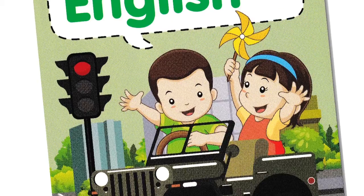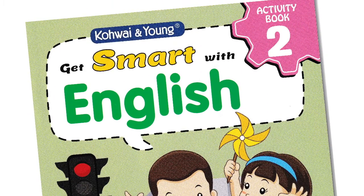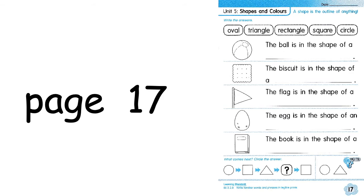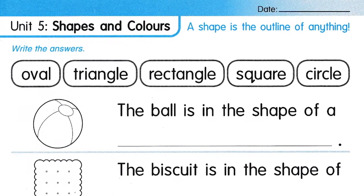Now, let us do our Get Smart with English Activity Book 2. Turn to page 17, Unit 5, Shapes and Colors. A shape is the outline of anything. Write the answers.